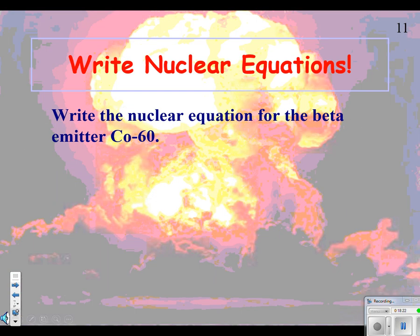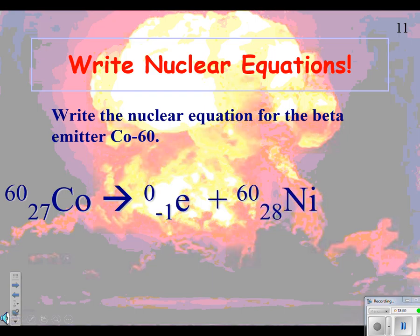Let's try another one. Write the nuclear equation for the beta emitter having cobalt 60. So that's going to be a beta on the product side, right? So we start with cobalt 60. We end up with a beta right here. And I end up having one more on the bottom, because these two have to add to get to this one. Bottom number tells me the identity.